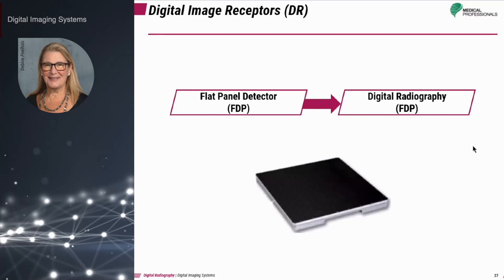Let's talk about the flat panel detector. DR, or digital radiography, is a term used to describe digital image receptors that do not require a plate reader. The image receptor is immediately ready for a new exposure. DR may involve a cassette or it may be cassetteless. DR systems have, in many cases, reduced the number of steps in the imaging process and eliminated the need for cassettes, thereby somewhat reducing operating costs.